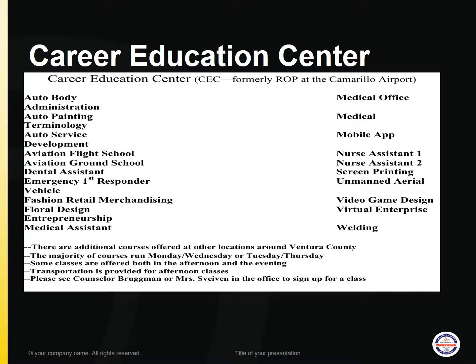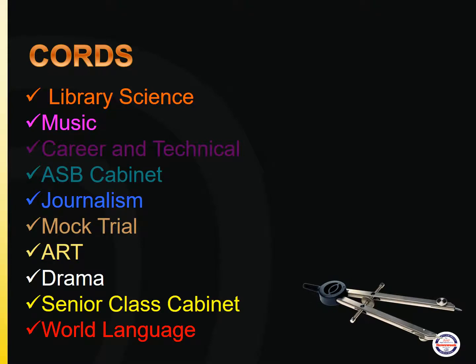The Career Education Center at the airport offers elective choices, formerly known as ROP. Most classes are offered two afternoons or two evenings a week, and some classes meet only once a month. If you're interested, see Ms. Bregman or Ms. Swaven. Also, here's a list of some of the available cords you may earn at Camarillo High School. Each cord has a different set of requirements, so please check with the elective teacher in the area you're interested in or see your counselor.